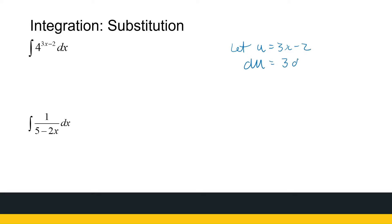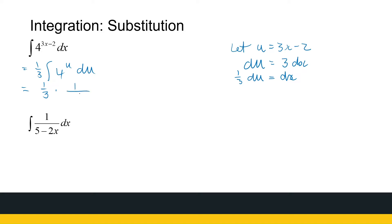du is then 3 dx. Do I have a 3 dx? No, I just have a dx, but that's okay — that's a third du. So once I substitute, this becomes a third integral of 4 to the power u du, and that we can integrate. We know the antiderivative of 4 to the power u, which is 1 over ln 4 times 4 to the power u plus c. So if we change back to x, we've got 1 over 3 ln 4 times 4 to the power 3x minus 2 plus c.